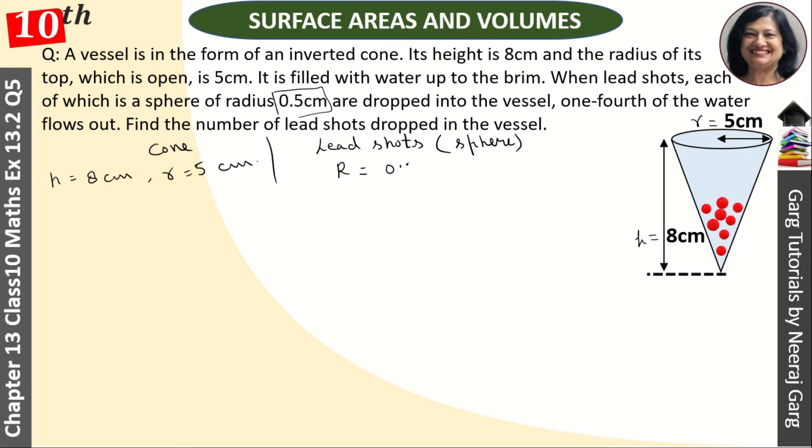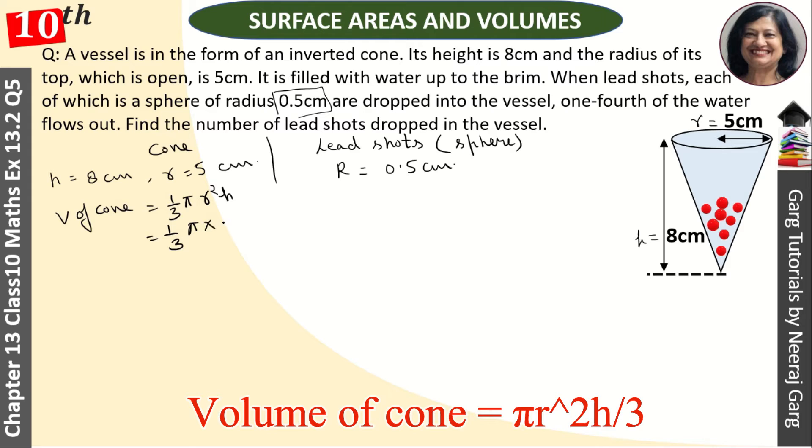So first we calculate volume of cone. Volume of cone equals 1 upon 3 pi r squared h. So it is 1 upon 3 pi, r is 5 squared, h is 8. So this is 200 upon 3 pi centimeters cubed.